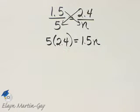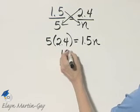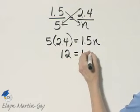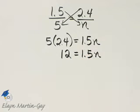Now let's multiply on the left side. If you go off to the side and multiply, 5 times 2 and 4 tenths is 12. So 12 is 1 and 5 tenths n.